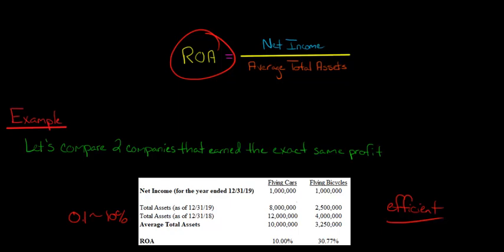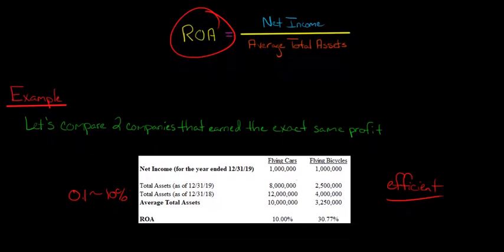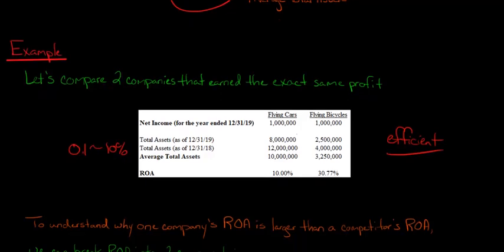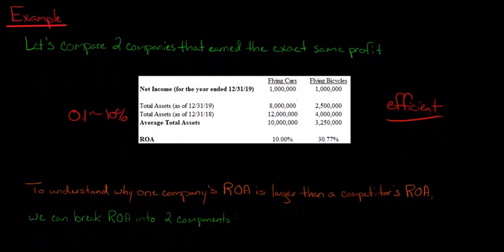But if the other person started out with 50 million dollars and came back with that same profit of $100,000, you wouldn't be that impressed. Because the one person started with $10,000, the other one started with 50 million. So that's the entire concept behind what we're trying to figure out with ROA. We're just taking the net income and saying, let's scale the net income by the average total assets to see how profitable this company was given the amount of resources, the amount of assets that the company had access to over the time period.